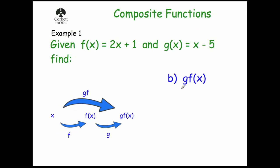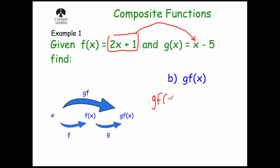Part B — this time we want to find gf of x. Notice the f is closest to the x, which means we apply the function f first and then apply the function g. So to find this composite function gf of x, we take our f of x and put it into g. Our f of x is this, and we put it into the function g for the value of x.